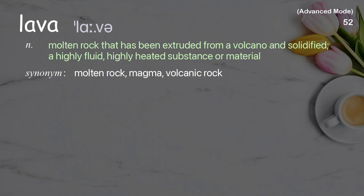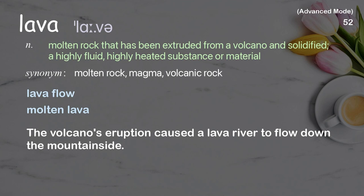Lava: Molten rock that has been extruded from a volcano and solidified; a highly fluid, highly heated substance or material. Examples: Lava flow, Molten lava. The volcano's eruption caused a lava river to flow down the mountainside.